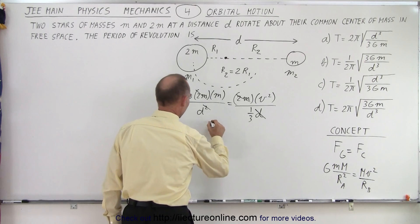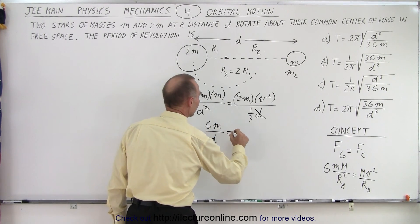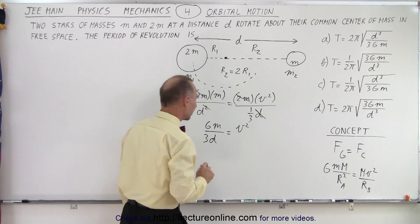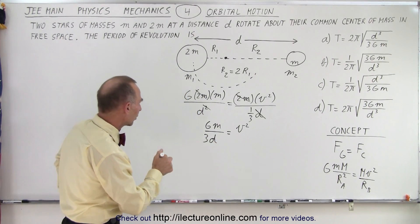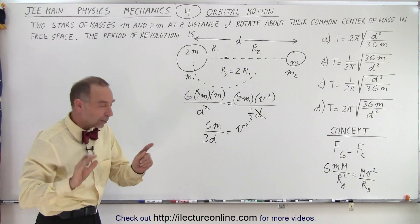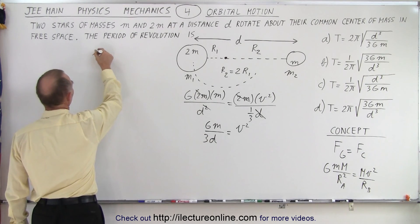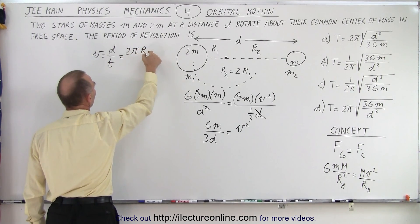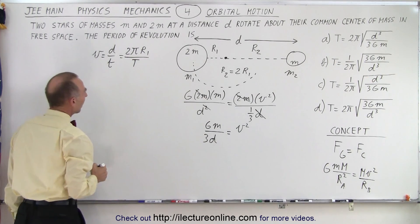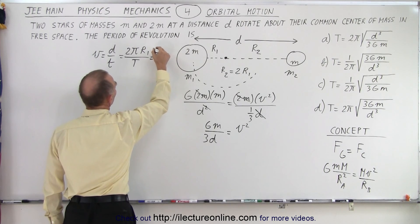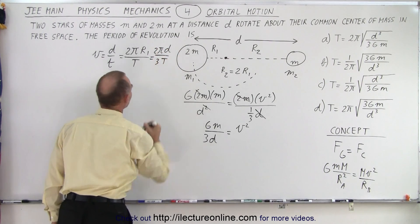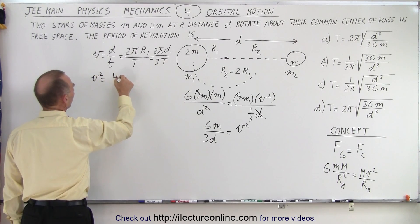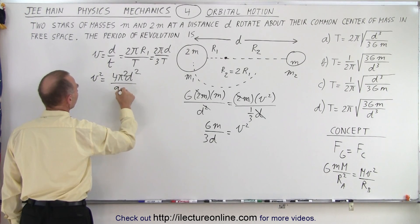Cleaning this up, we write Gm/d equals v² — since one-third in the denominator becomes three on the other side. Now we're looking for the period, not the velocity, so we need a relationship between velocity and period. We know v equals distance over time; going around a circle that's 2π times r1 divided by the period T. Since r1 is one-third d, that gives v equals 2πd over 3T.